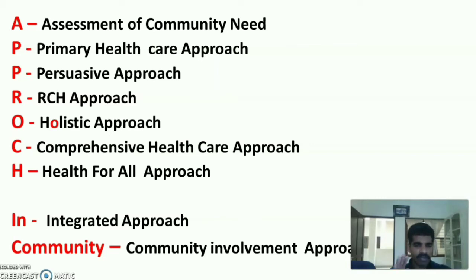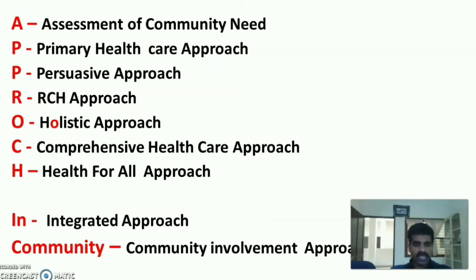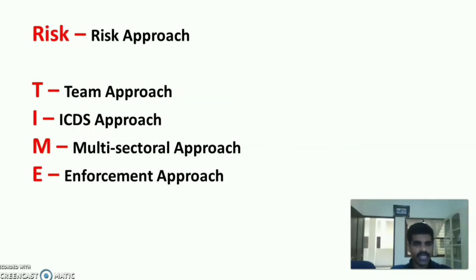Expanding the mnemonic: A stands for assessment of community need; P for primary health care approach; second P for persuasive approach; R for RCH approach; O for holistic approach (H changed to O); C for comprehensive health care approach; H for health for all approach; I for integrated approach; community for community involvement approach; risk for risk approach; T for team approach; I for ICDS approach; M for multi-sectoral approach; and E for enforcement approach.